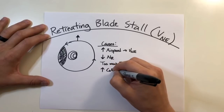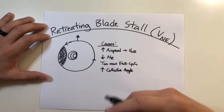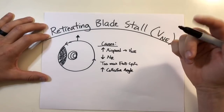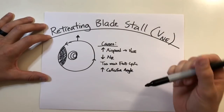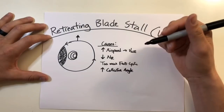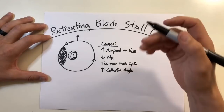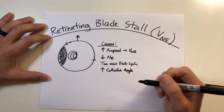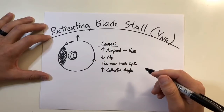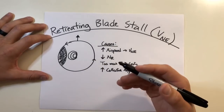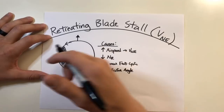Lastly, excessively high collective angle. Some manuals list high gross weights, high G loading, and high altitudes as causes for retreating blade stall, but these are more so factors that pertain to collective angle. A helicopter can fly at high gross weights, high altitudes, and high G loading — but when you're flying a helicopter that's too heavy and too fast for the collective angle, you could find yourself in a retreating blade stall. Just flying at high weight, altitude, or G loading doesn't in itself cause retreating blade stall; those are contributors.